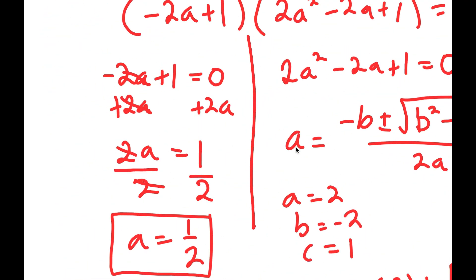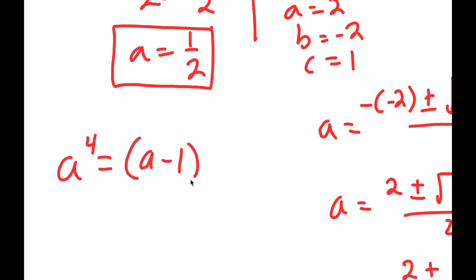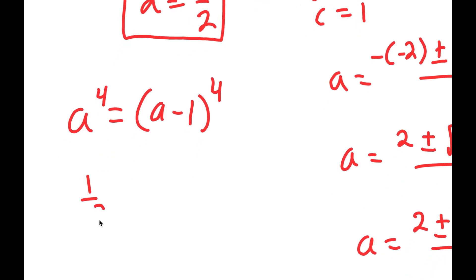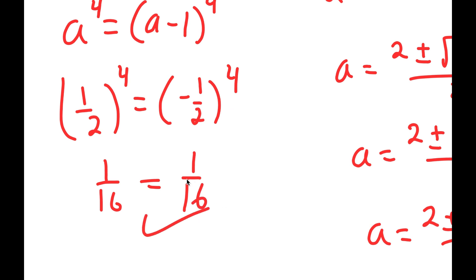Finally, just to check — I can't check the imaginary solutions, but I can check 1 half. So I have a to the power of 4 is equal to a minus 1 to the power of 4. With a equal to 1 half, I get 1 half to the power of 4 is equal to negative 1 half to the power of 4. Both of these equal 1 over 16, so this confirms my solution is correct.